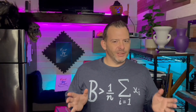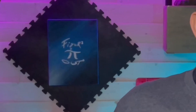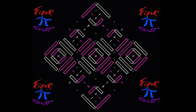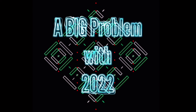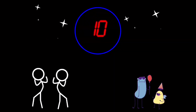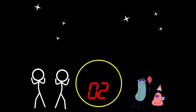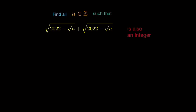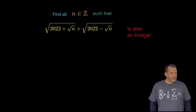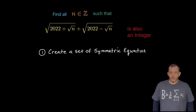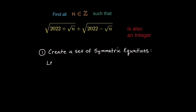Here's the problem with 2022: find all integers n such that the sum of these two radicals is also an integer — that is, a signed whole number. We begin by letting each radical be equal to a new variable; here we'll use a and b.